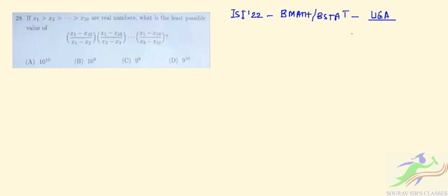So question number 28 is saying that x1 is greater than x2 greater than dot dot dot to x10. They are all real numbers. So we have to find the least possible value of this expression.